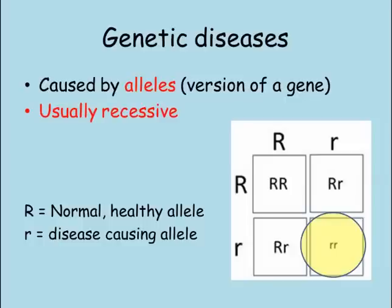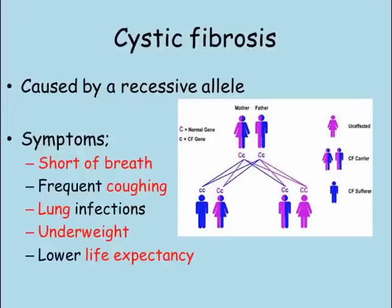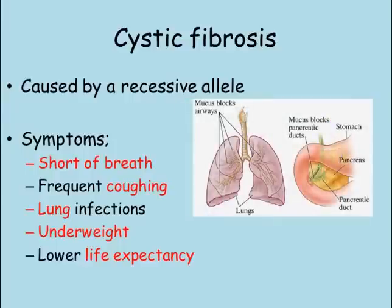Cystic fibrosis is a genetic disease caused by a recessive allele. The most well-known symptoms of cystic fibrosis are being short of breath and frequent coughing. Cystic fibrosis causes the body to produce mucus at the bottom of the trachea, or windpipe, that is thicker and more sticky than normal. This is what causes the cough, and it can also lead to lung infections as the mucus builds up in the lungs over time.